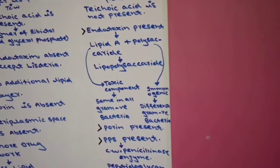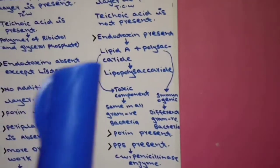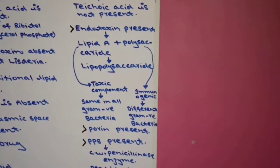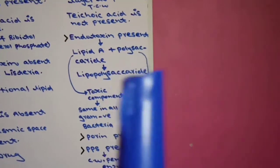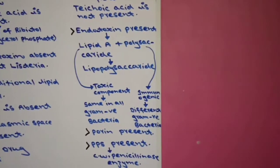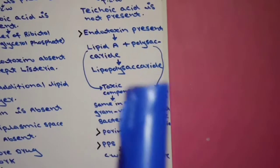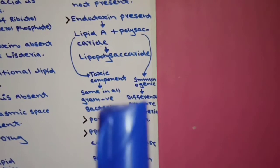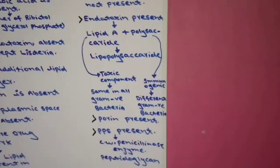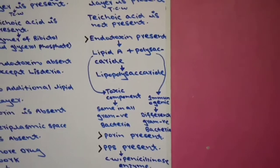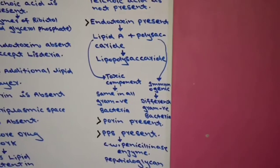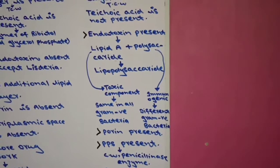The lipid A component of endotoxin is the toxic component, and it is the same in all gram negative bacteria. The polysaccharide component is the immunogenic component — it stimulates our immune system and is different in different gram negative bacteria. These two points are important: lipid A is the toxic component, same in all gram negative bacteria; polysaccharide is the immunogenic component, different in different gram negative bacteria.